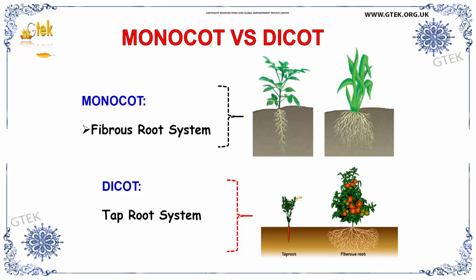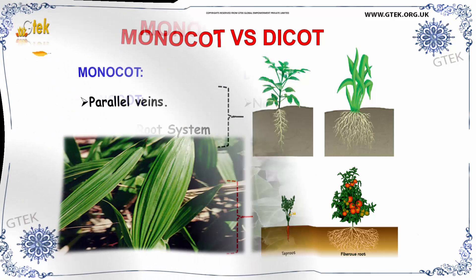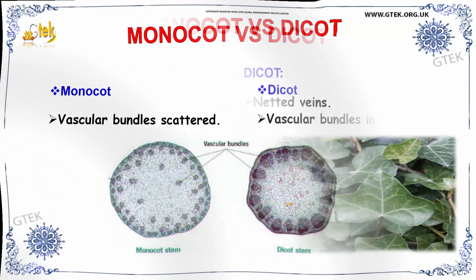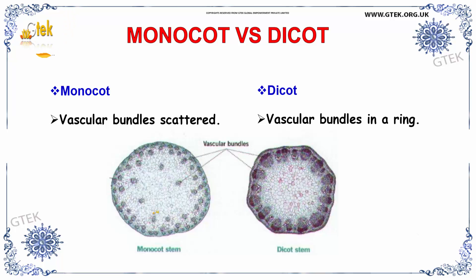Monocot has a fibrous root system, whereas dicot has a tap root system. You can see the fibrous root and tap root here — that is the difference between both of them. And monocot has parallel veins, whereas dicot has netted veins. Parallel veins and netted veins are depicted here. And importantly, monocot has vascular bundles scattered, whereas dicot has vascular bundles in a ring. You can see the differences — here is the monocot stem and dicot stem. Here the bundles are scattered, so it is called vascular bundles scattered. Here the bundle is in a ring, so it is called vascular bundles in a ring.